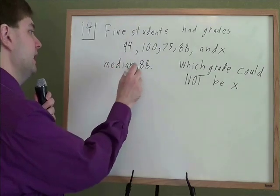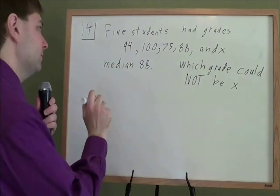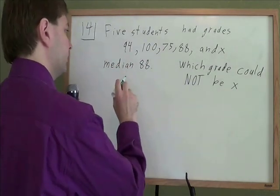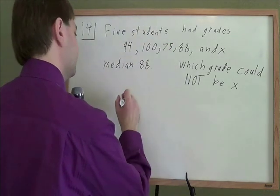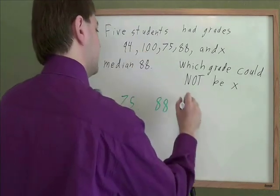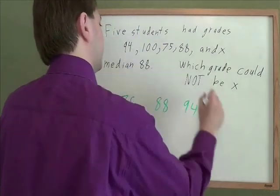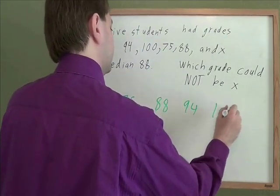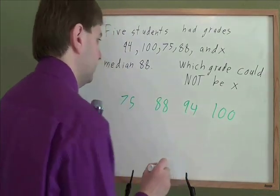This problem talks about a median. And the way to talk about a median is to put all your numbers in order from smallest to greatest. So we've got 75, and then we've got 88, and then we've got 94, and then we've got 100. X, we don't know where it goes. We'll have to figure that out later.